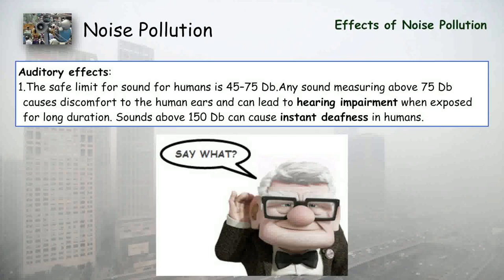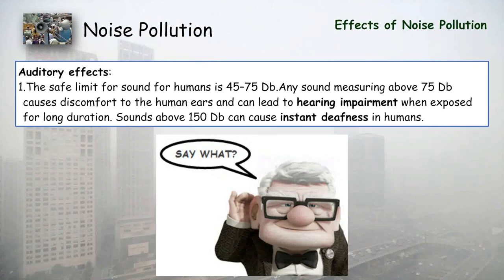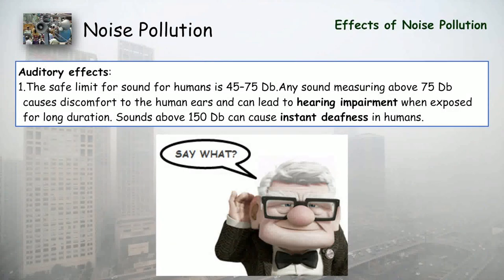There are two types of effects of noise pollution: auditory effects, related to hearing power, and non-auditory effects, related to general health. The safe limit for sound is up to 75 dB for human beings. Any sound above 75 dB can cause discomfort to human ears and lead to hearing impairment when exposed for long durations. Sounds above 150 dB can cause instant deafness.